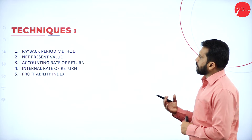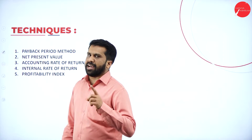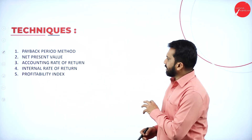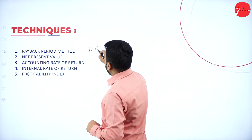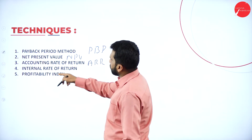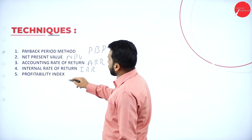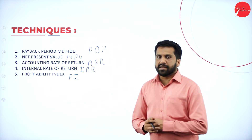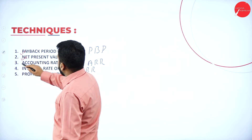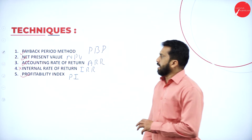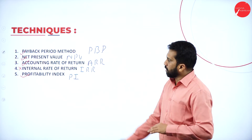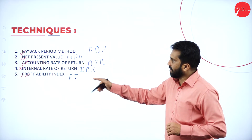Now, techniques of capital budgeting. As I told you at the end of the session, there are almost five techniques. The first is Payback Period; second is NPV (Net Present Value); third is ARR; fourth is IRR; and fifth is Profitability Index. In your exam, concentrate on payback period, net present value, IRR, and profitability index. IRR they will ask but the probability is less, so we'll go with IRR also at the end. Before that we'll complete the other four.